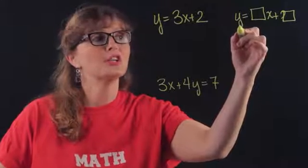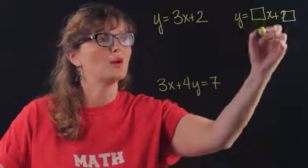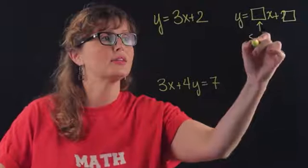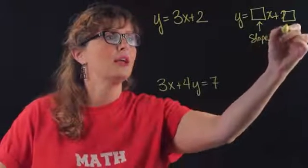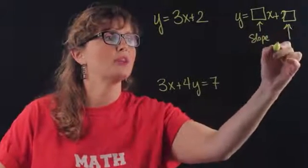So a linear equation can always be written in this form where this is the slope and this guy hanging off here is the y-intercept.